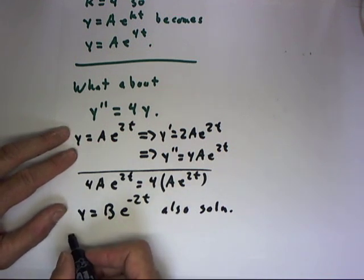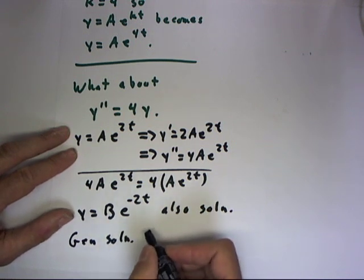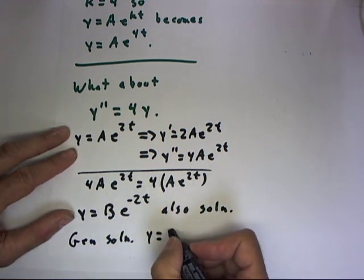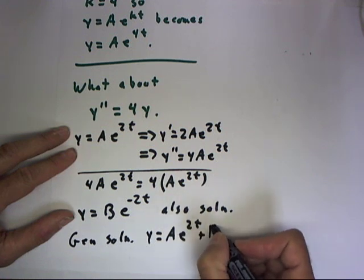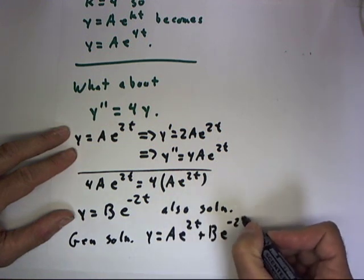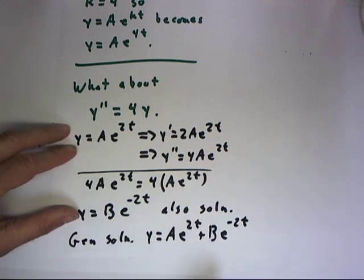The general solution to this equation, then, would be y equals ae to the 2t plus b e to the negative 2t. And we end up with two arbitrary constants, a and b.